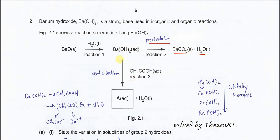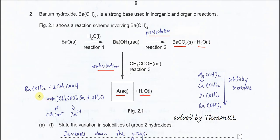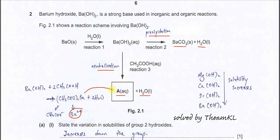For the reaction tree, barium hydroxide reacts with ethanoic acid to form compound A and H₂O. Barium hydroxide is the alkaline solution reacting with the acid, so this is a neutralization reaction. The equation is: barium hydroxide with ethanoic acid forms barium ethanoate and H₂O. The barium ion is 2+ and the ethanoate ion is negative, so the formula is (CH₃COO)₂Ba. That is compound A.